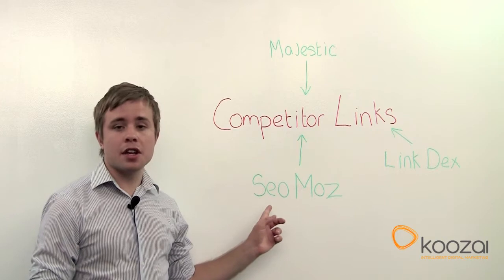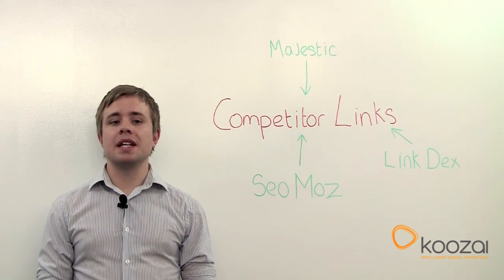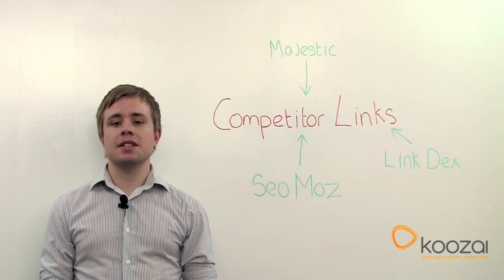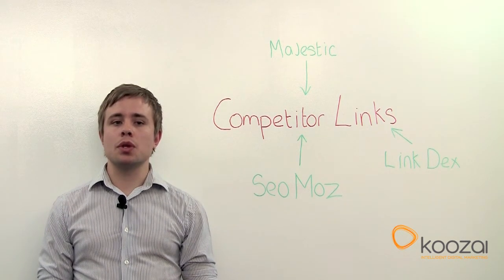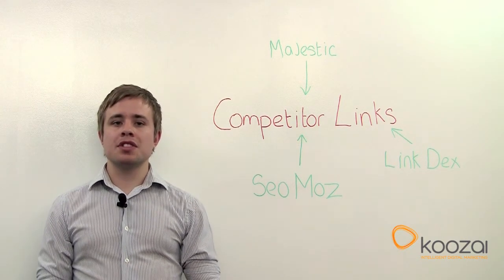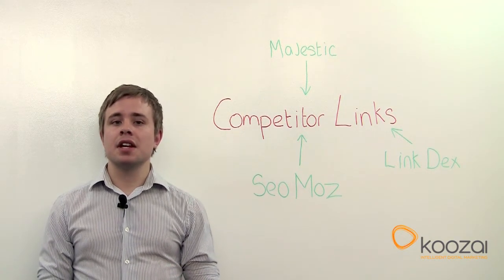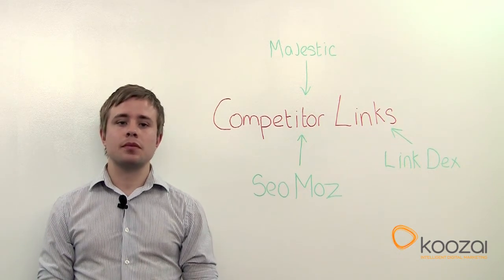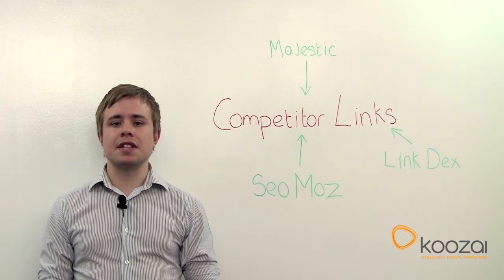Secondly, SEO Moz and their tools. SEO Moz is a well known company in the SEO field. They offer a variety of good tools to assist you in your SEO activities. The competitor link research tool is a pro tool which will require a fee to gain access to. The tool is similar to Majestic where you are able to enter a competitor link for analysis. The platform aims to find the most quality websites and highlight the ones you don't yet have a link from. This could be very helpful and makes finding quality link sources a relatively quick process.